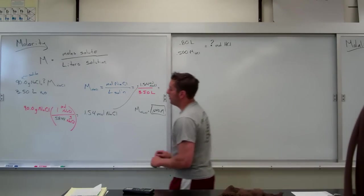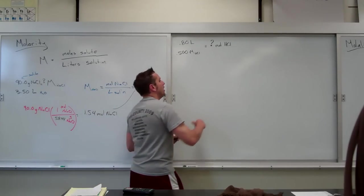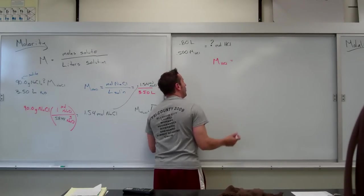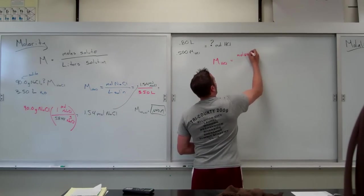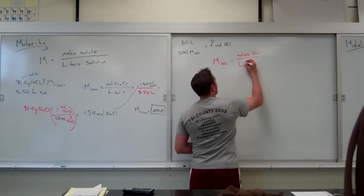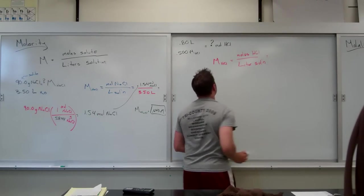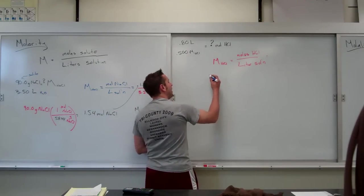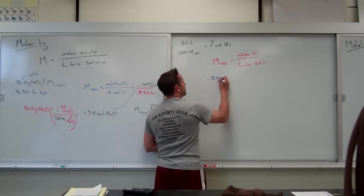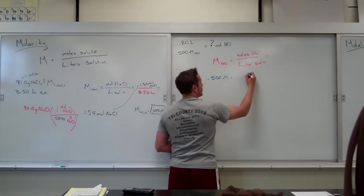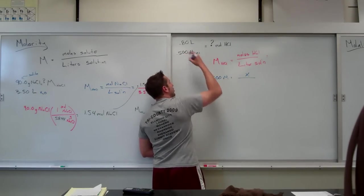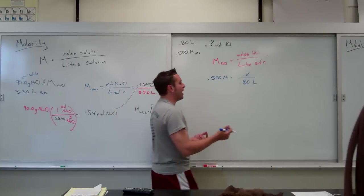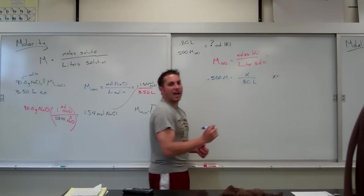There's two different ways we can do this problem. Method number one: you jump straight to the molarity equation, which says big M of HCl will be equal to moles HCl per liter of solution. From there, you plug in and you solve for what you're looking for. I was given the molarity, so I would say 0.500 big M is equal to moles of HCl is what I'm looking for. We'll call it X. Liters of solution was 0.80. This is a math class problem now, so to solve for X, I multiply both sides times 0.8.